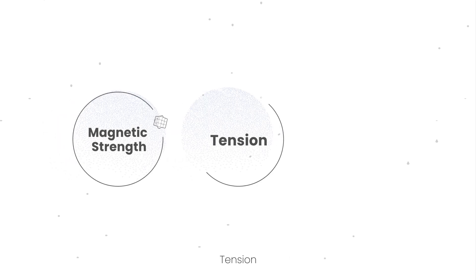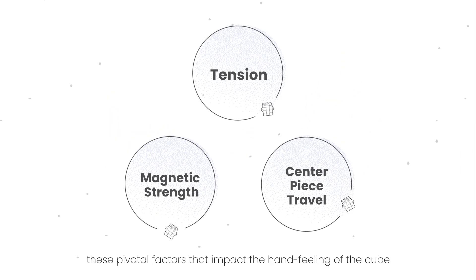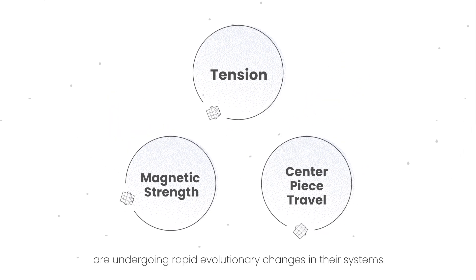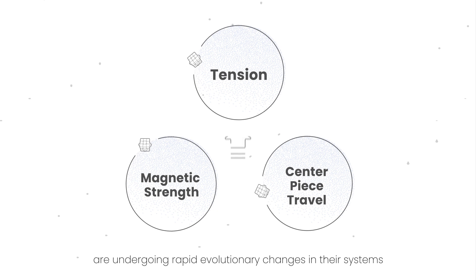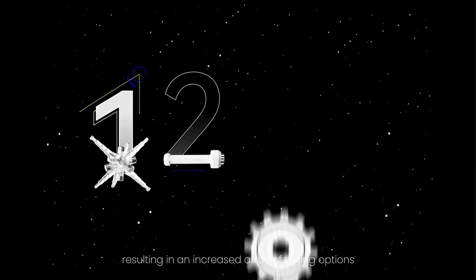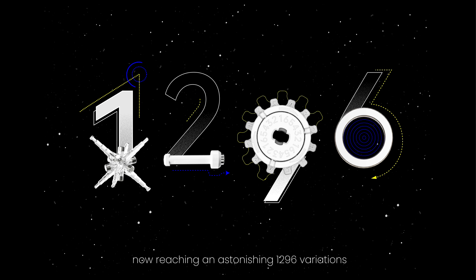Magnetic strength, tension, centerpiece travel. These pivotal factors that impact the hand feeling of the cube are undergoing rapid evolutionary changes in their systems, resulting in an increased array of tuning options, now reaching an astonishing 1,296 variations.